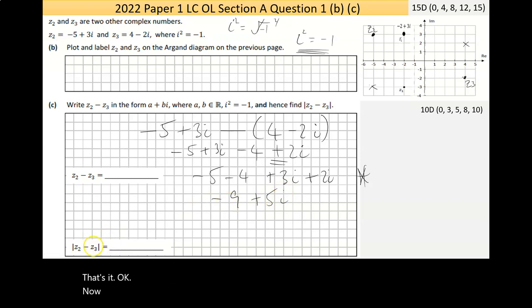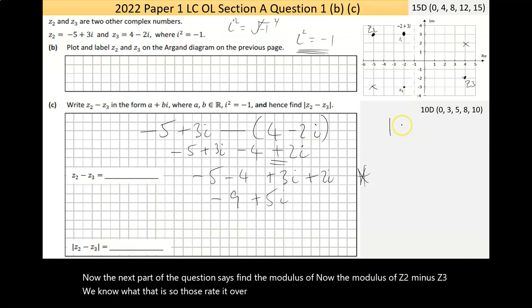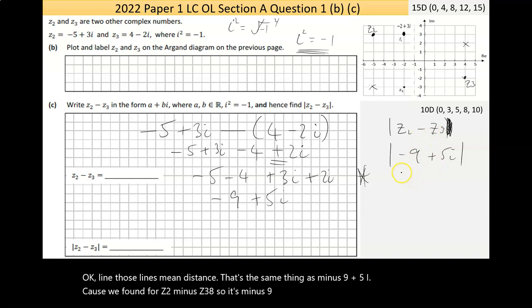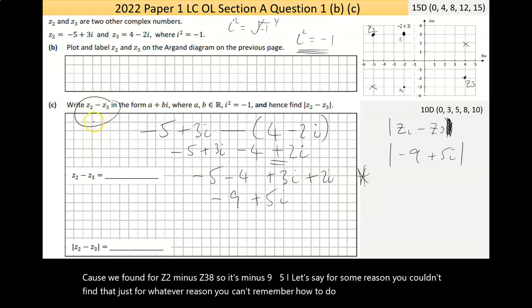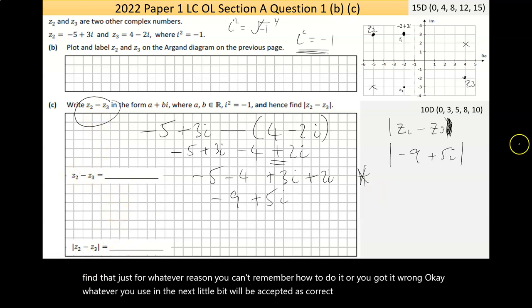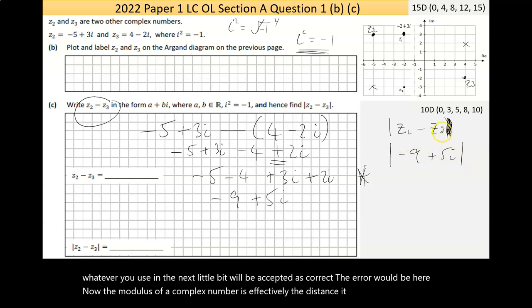Now the next part of that question says find the modulus of, the modulus of Z2 minus Z3. We know what that is. So the modulus of Z2 take away Z3, those lines mean distance. That's the same thing as minus 9 plus 5i, because we found what Z2 minus Z3 is and it's minus 9 plus 5i. Let's say for some reason you couldn't find that, just for whatever reason you can't remember how to do it or you got it wrong. Whatever you use in the next little bit will be accepted as correct. Like the error would be here. Now the modulus of a complex number is effectively the distance it is away from the origin.